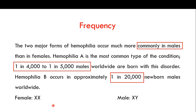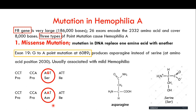Regarding hemophilia A, mutations in a particular gene lead to hemophilia A. The gene responsible is known as the F8 gene. This F8 gene is made up of 186,000 bases, contains 26 exons, and encodes the Factor 8 clotting factor. The Factor 8 clotting factor is made up of 2,332 amino acids.